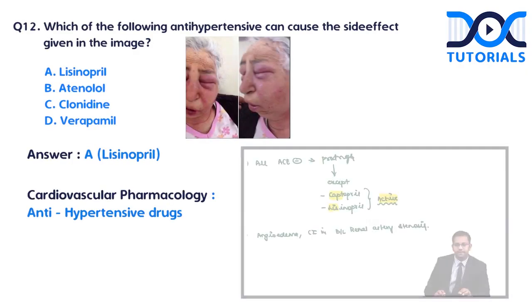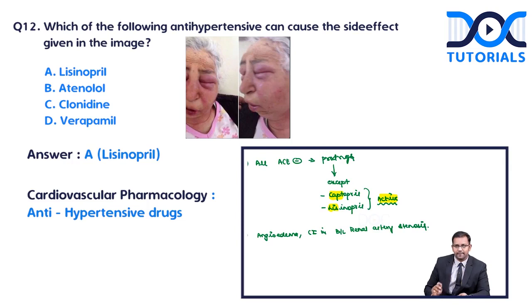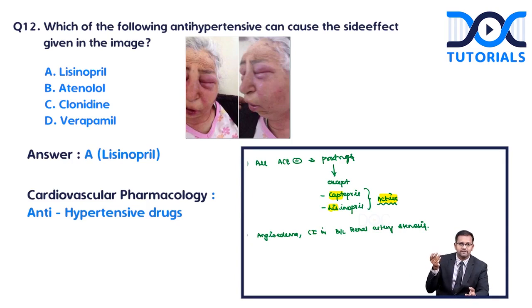Even if the patient has diabetic nephropathy, if there is bilateral renal artery stenosis, ACE inhibitors should not be administered. Even though ACE inhibitors can be given for diabetic nephropathy, bilateral renal artery stenosis is a contraindication and there is no benefit of giving this drug in that setting.